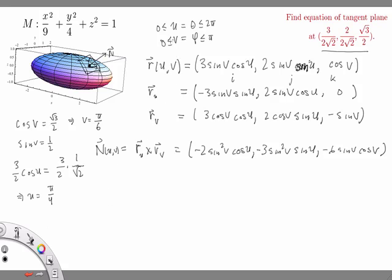Technically, because U is from zero to two pi, U could be pi over four or seven pi over four. But checking the second component, we have two over two times sine of U equals two over two times one over root two, so sine of U also equals one over root two. This eliminates seven pi over four, and so we know U equals pi over four.